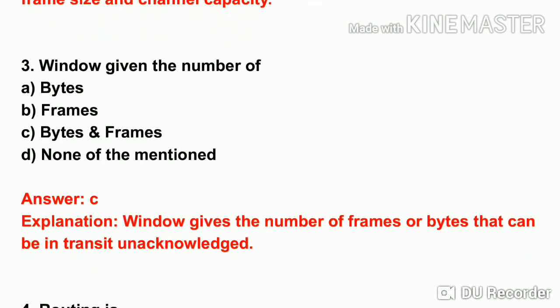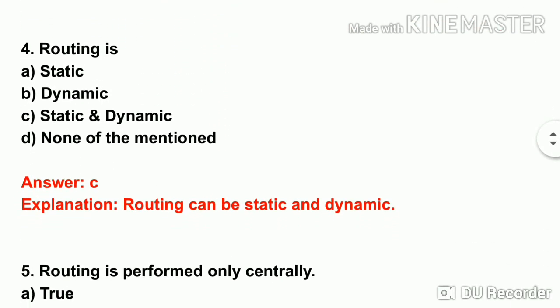The third question: a window is given the number of dash — options: bytes, frames, bytes and frames, or none of the mentioned. A window gives the number of frames. So the answer is frames.